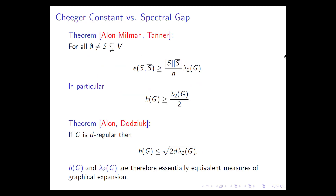What is the connection between the Cheeger constant and the spectral gap? There is a famous Alon–Milman–Tanner result which says that |E(S, S-complement)| ≥ |S|·|S-complement|/n times the spectral gap. Therefore, dividing by the smaller of |S| and |S-complement|, the Cheeger constant is at least λ₂/2. In the other direction, the Cheeger–Alon result says that if the graph is d-regular, then h(G) is bounded by a function of λ₂. The moral is that h(G) and λ₂ are essentially equivalent measures of graph expansion.